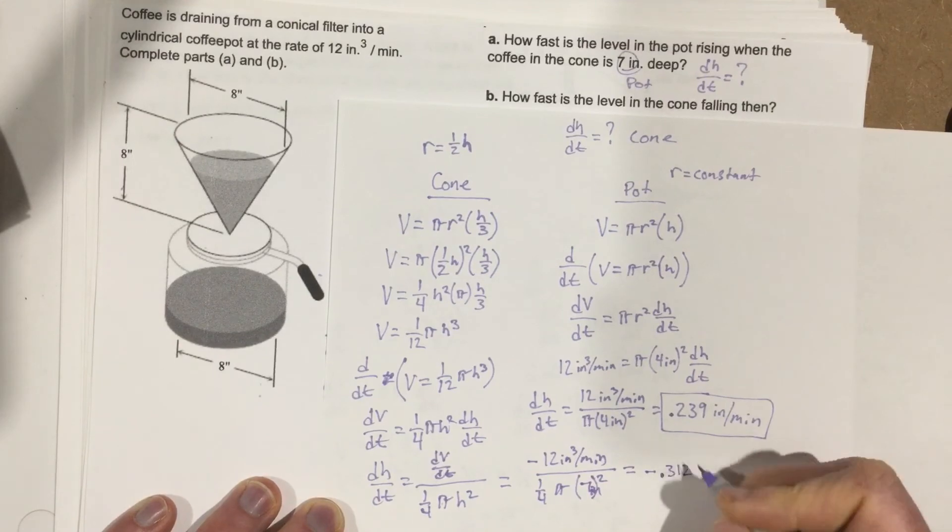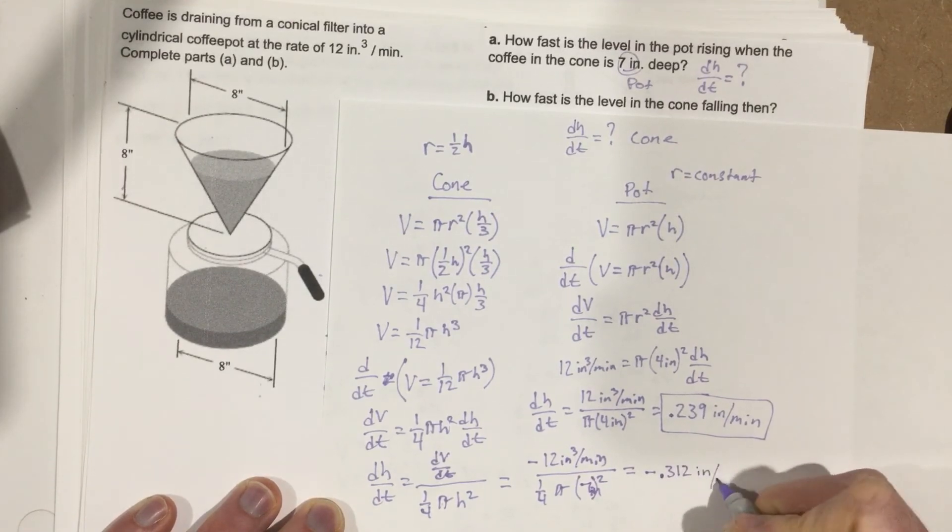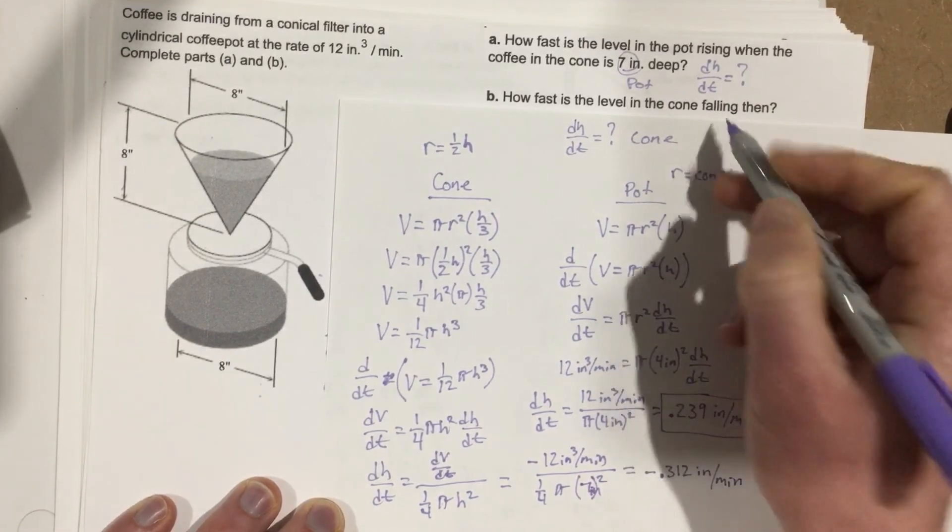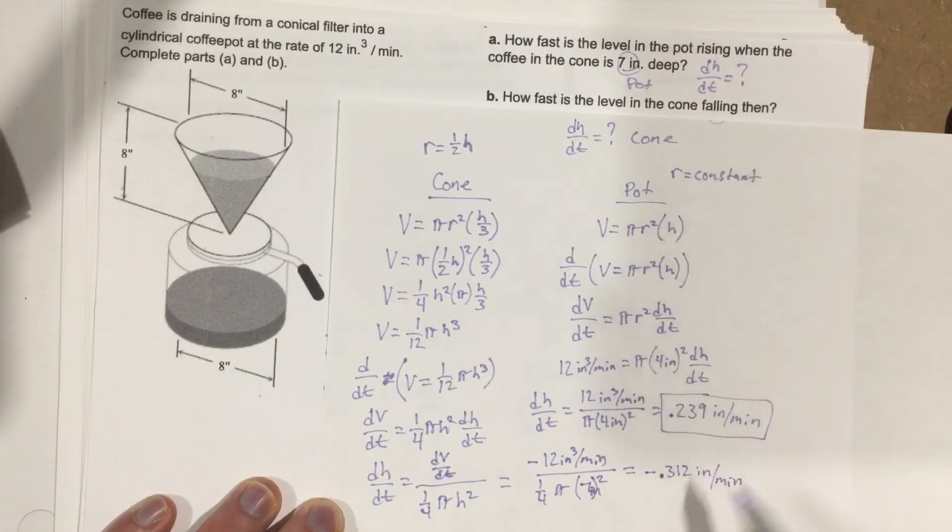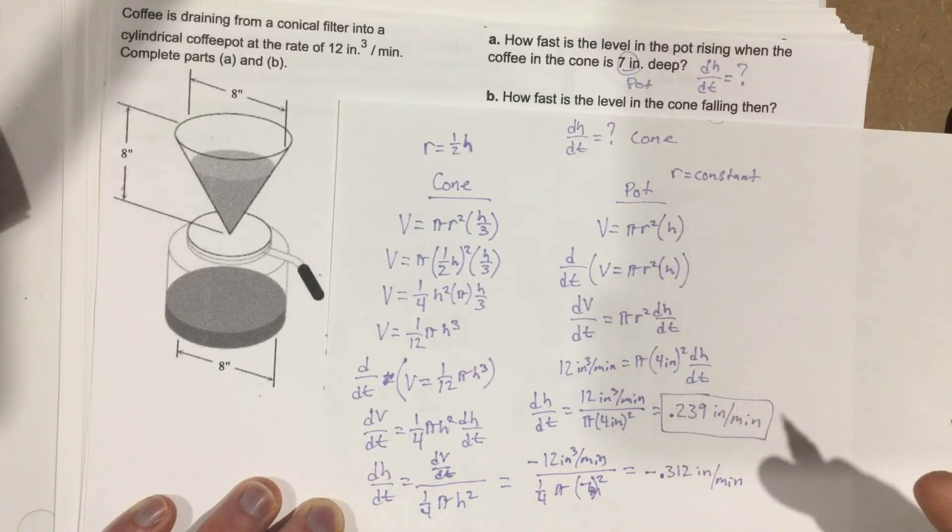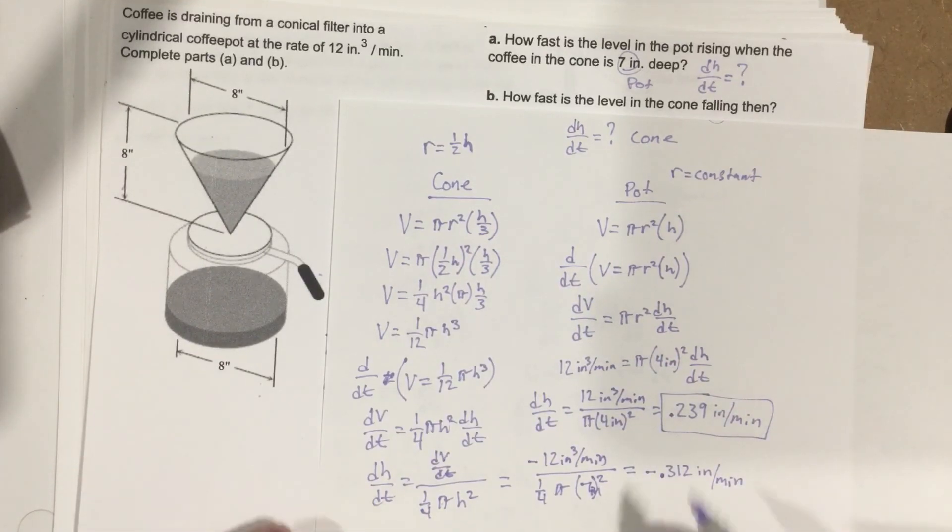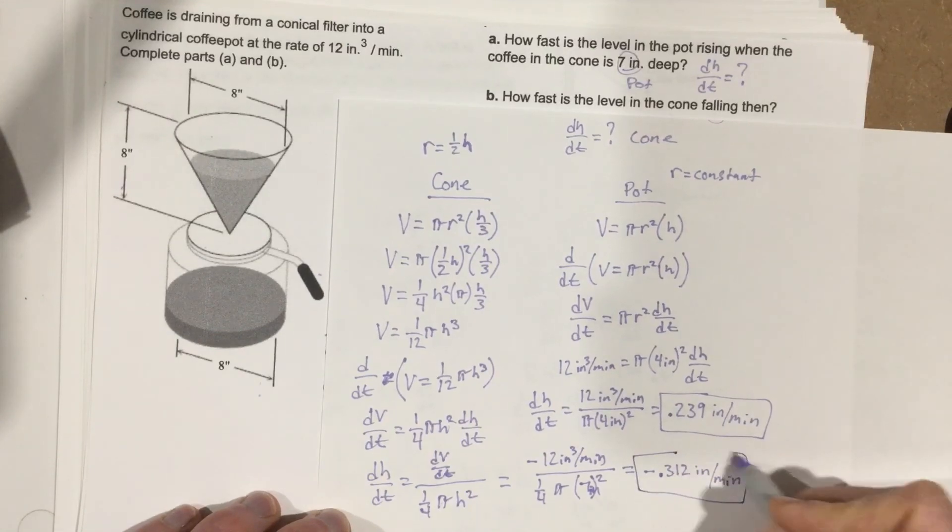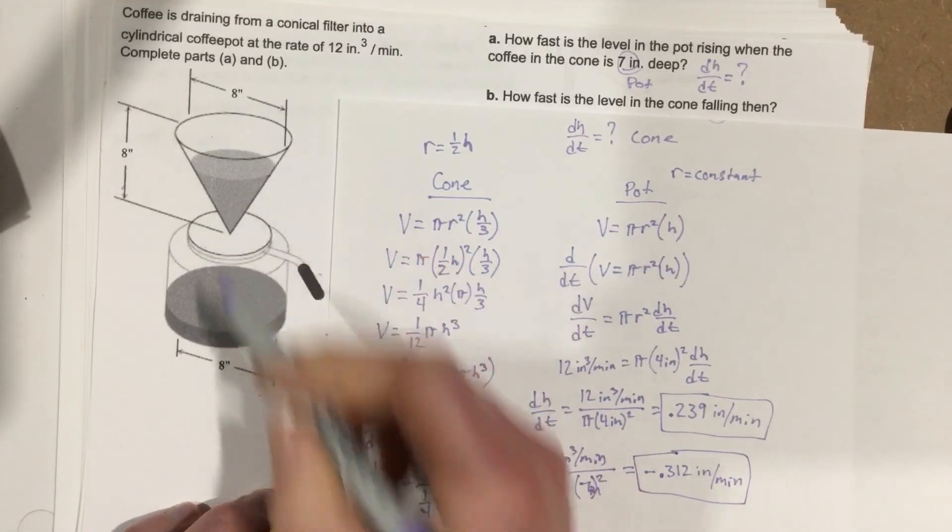When we plug all that in, we end up with -0.312 inches per minute. One thing to keep in mind is the wording - they say it's falling, so they might actually want the positive version since they specifically say falling. But we're losing basically just over a quarter inch per minute for the height there on the cone.